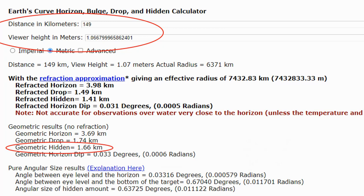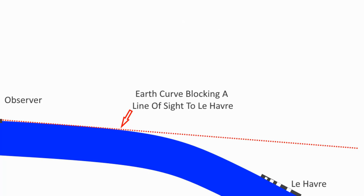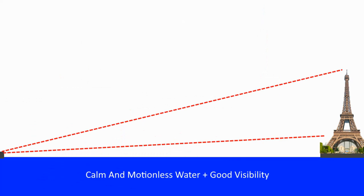From an observer height of 3.5 feet and looking at Le Havre, there should be 1.66 kilometres of geometric hidden — or in meters, 1,660 meters. The highest part of Le Havre is just 110 meters. This means that Le Havre is 1,550 meters, or close to a mile, behind the curve. In other words, we should not be able to see it. The physical edge of the globe would cut off the direct line of sight to it. In fact, you could put the Eiffel Tower and the Empire State Building on top of one another in Le Havre and there would still be half a mile of hidden curvature, so you would not see them — that is, of course, if we lived on a globe.